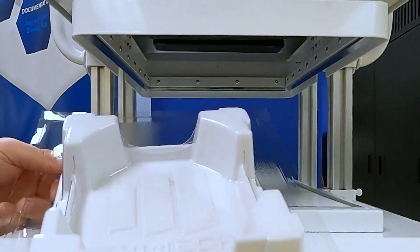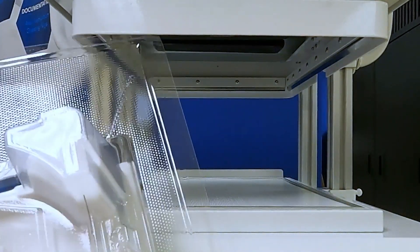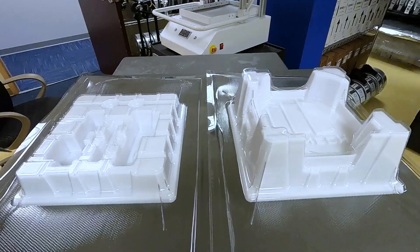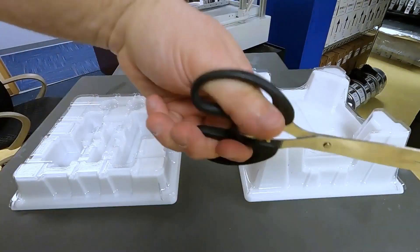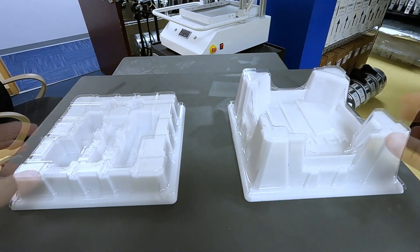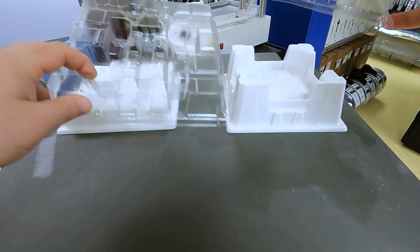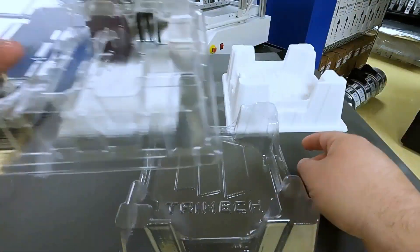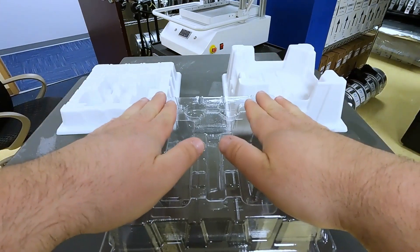And there we have it. We have our pulled plastic sheet ready to go. Here you have the bottom and top together, and if you flip them around, you can actually set your parts right on top for display at an event.